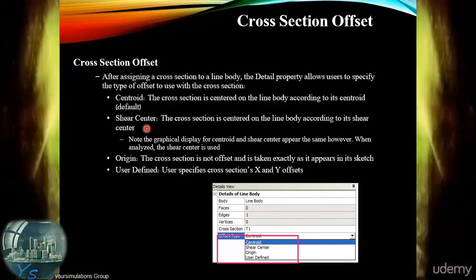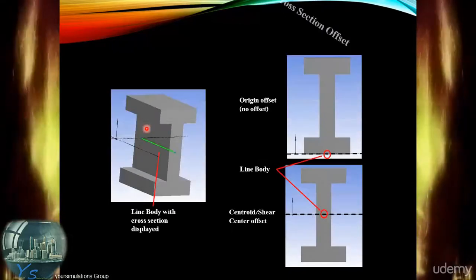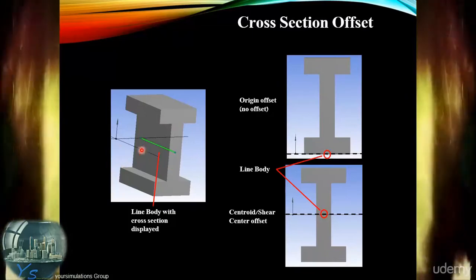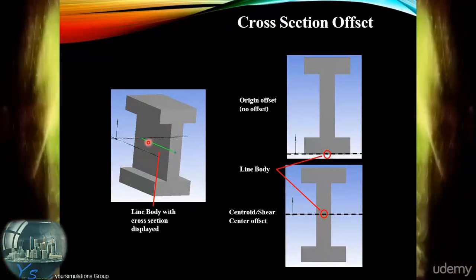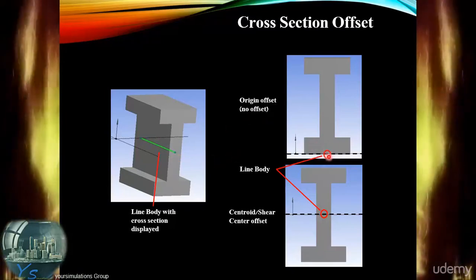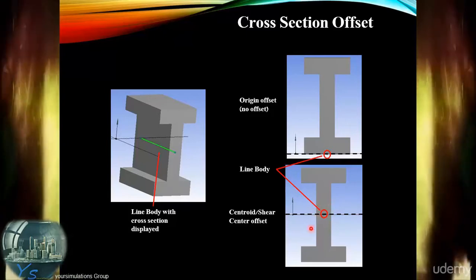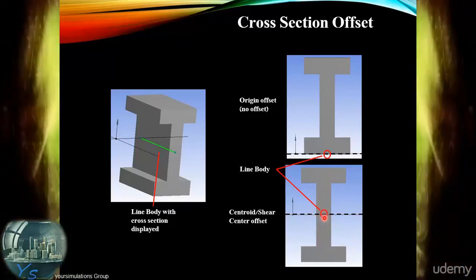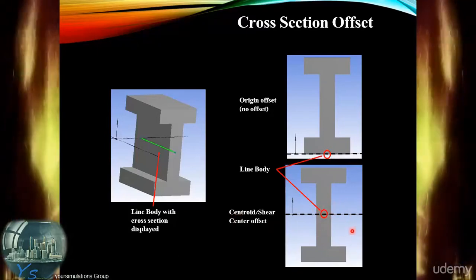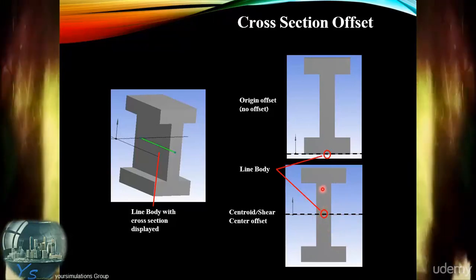An example shows the effect of the cross-section offset. Here we can see an I-section beam with a line body representing the centre of the cross-section. With the origin offset and no offset, the line body is placed at the bottom of the cross-section. We can opt for a centroid or shear centre offset, which shifts the cross-section upward so that the centroid or shear centre then coincides with the line body vector, correctly offsetting it.